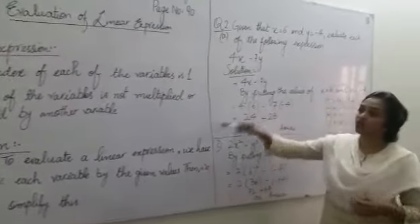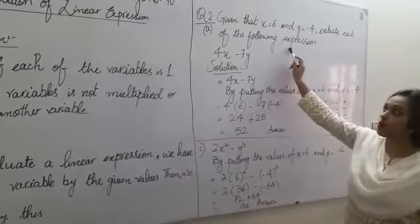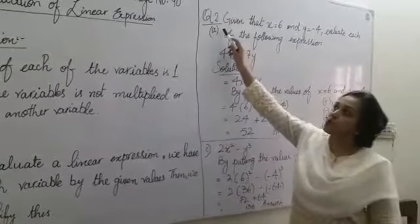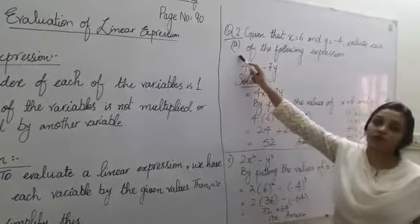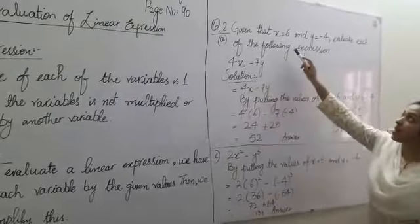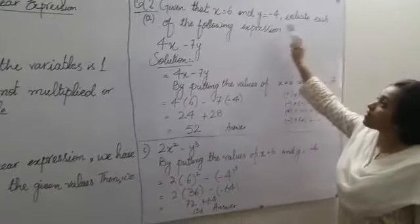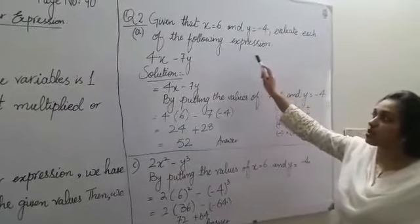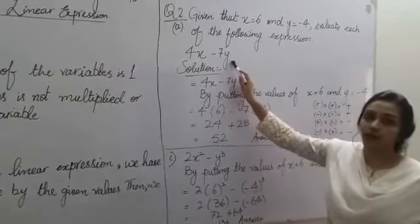I will explain the evaluation of linear expression by the following question which is from exercise 4a, page number 90, question number 2, further question 8. Given that x is equal to 6 and y is equal to minus 4, evaluate each of the following expressions. Here we have a linear expression which is 4x minus 7y.